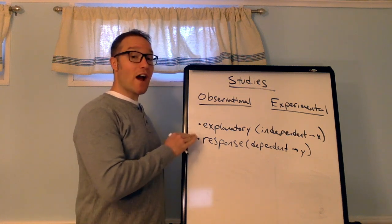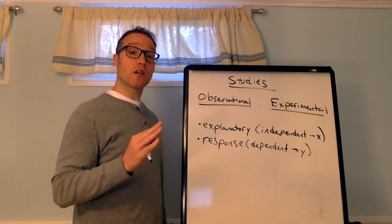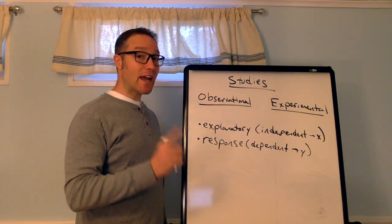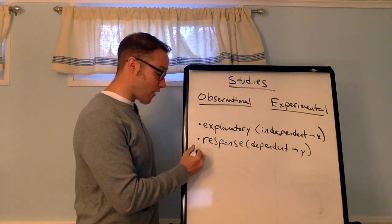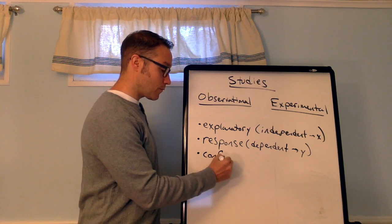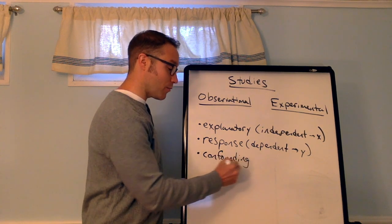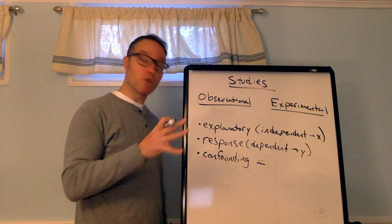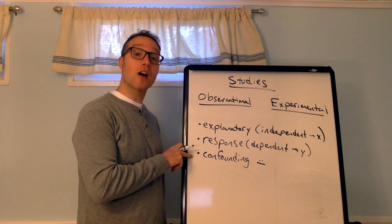Now, these are the two variables that you typically want to connect in a study. However, you have to be careful of confounding variables or lurking variables. A confounding variable, something that we don't want. We want to reduce the effects of confounding variables by using control.